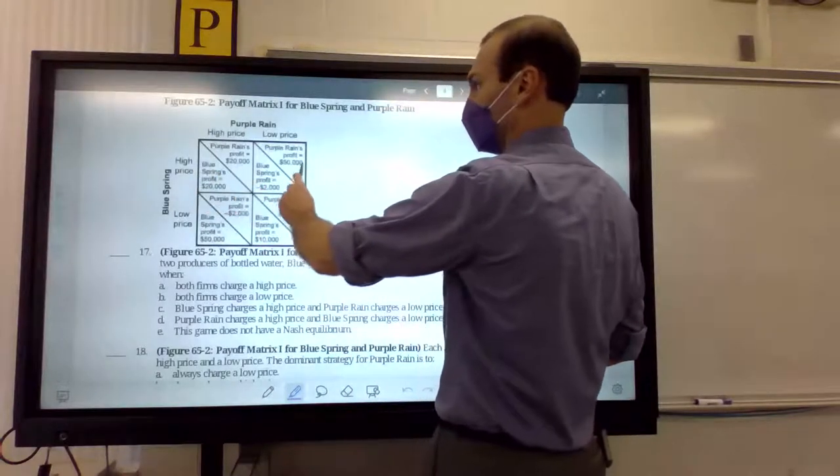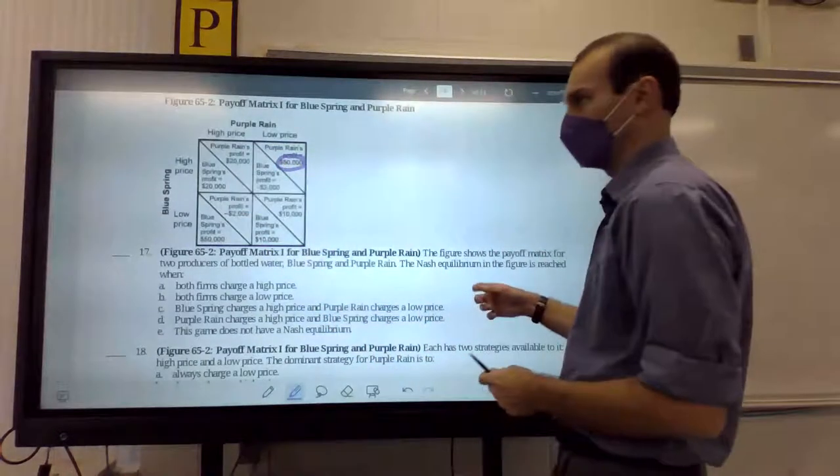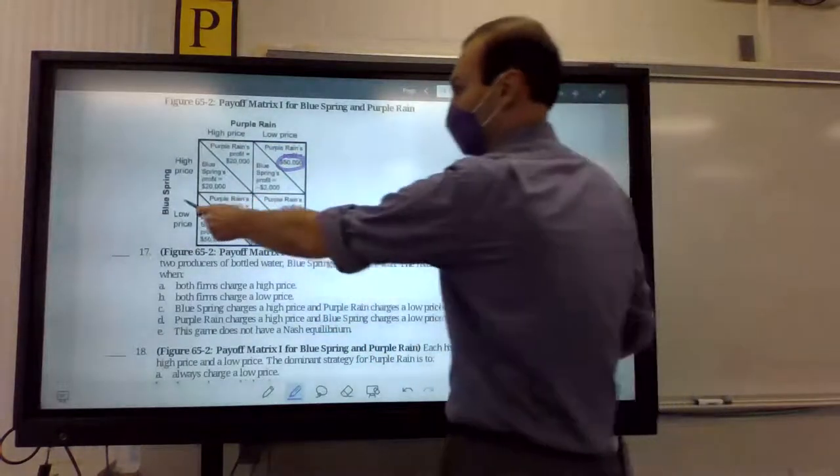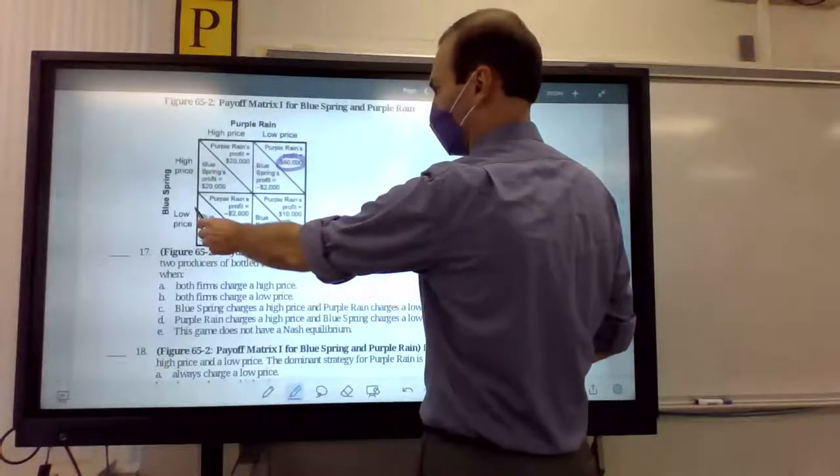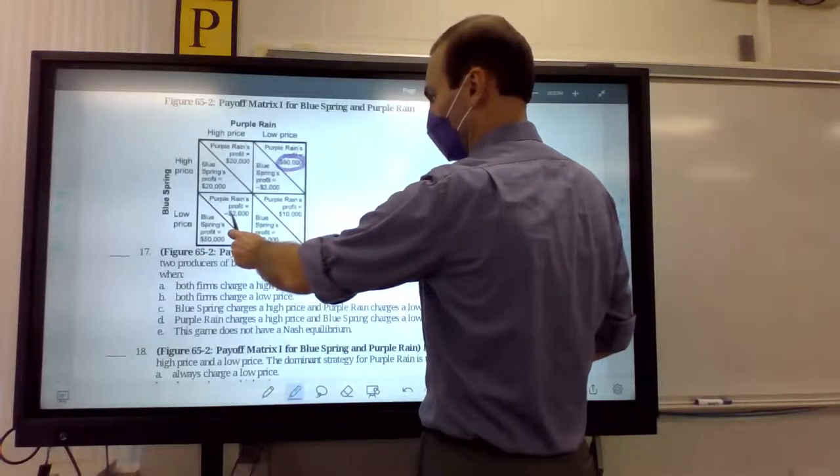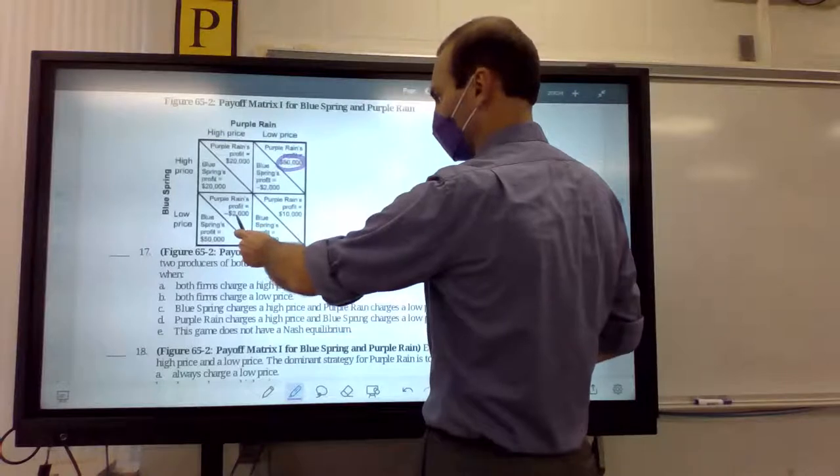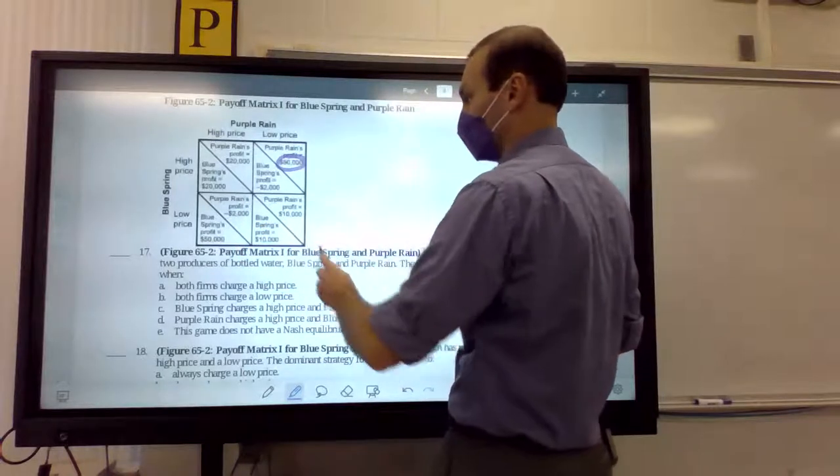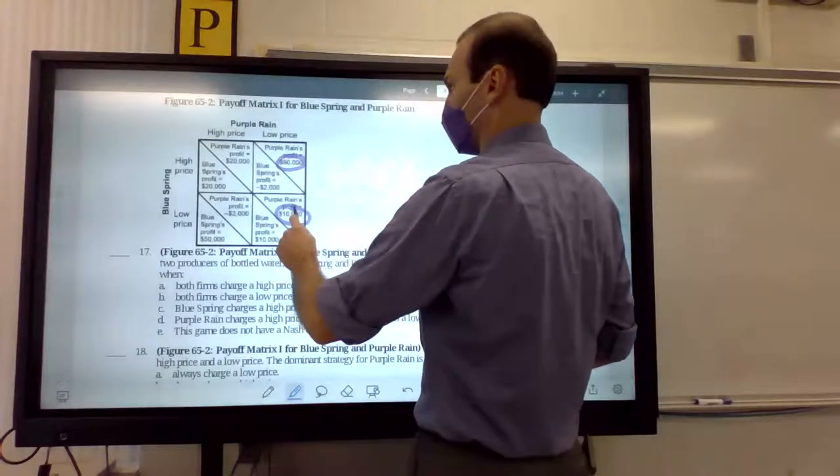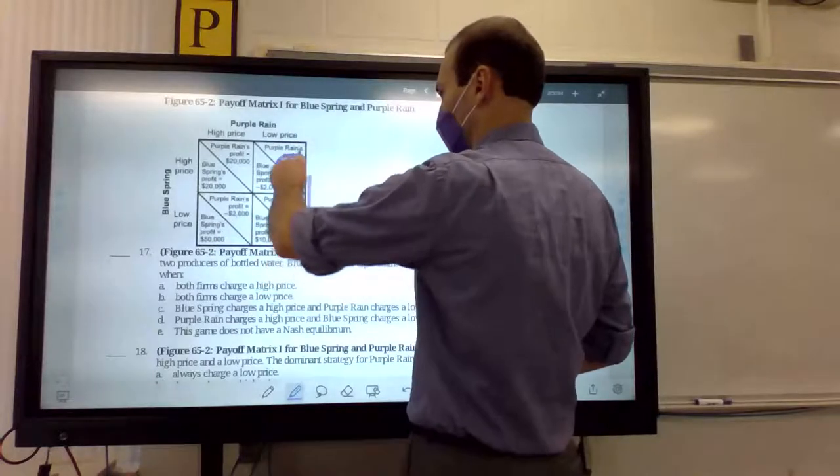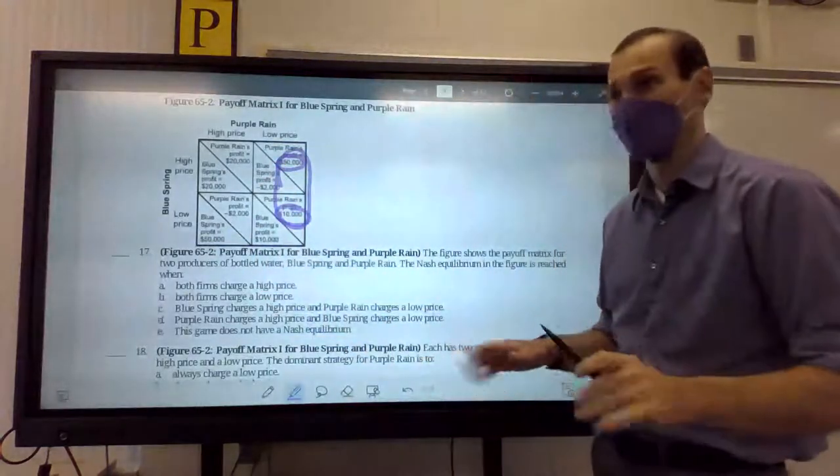$50,000. Have a low price. But, if blue springs has a low price, what should purple rain do? Should they make negative $2,000 or $10,000? $10,000. Okay. Does purple rain have a dominant strategy? Yes. Yes. They're going to have low price no matter what.